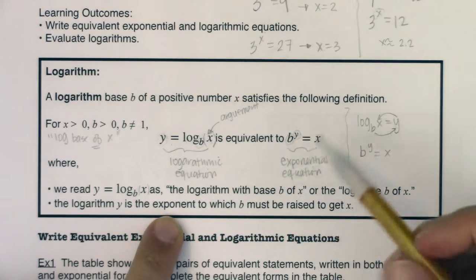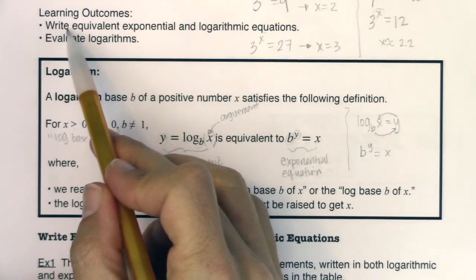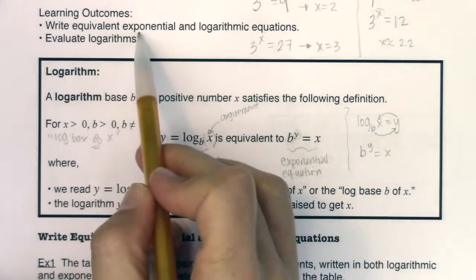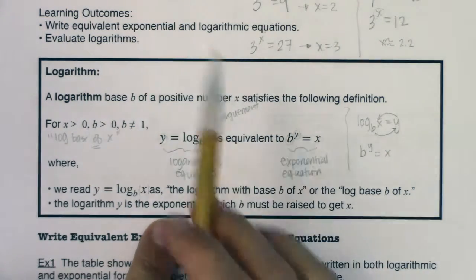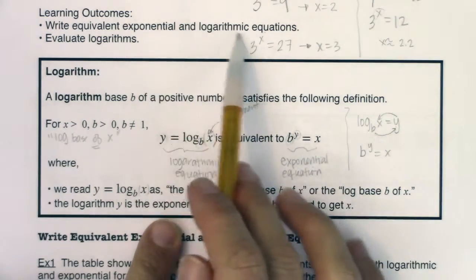All right, so as we move through this, we have to be okay with writing equivalent exponential and logarithmic equations. And we did that in example one. And we use that idea in examples two, three, and four.